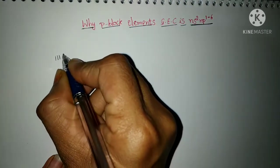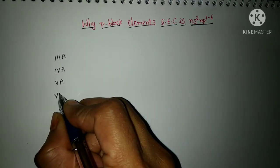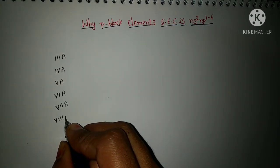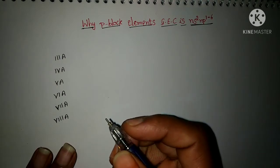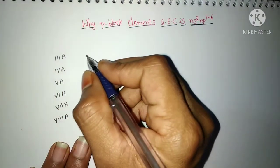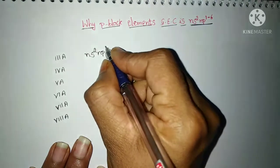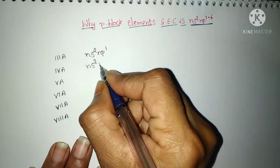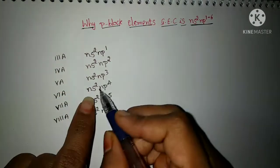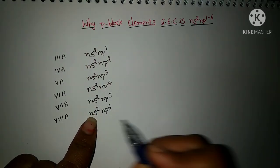In the P block, the groups present are 3A, 4A, 5A, 6A, 7A, and 8A — a total of 6 groups. The general electronic configuration for 3A group is NS2 NP1. For 4A group it is NS2 NP2. For 5A group NS2 NP3. For 6A, NS2 NP4. For 7A, NS2 NP5. For 8A, NS2 NP6.